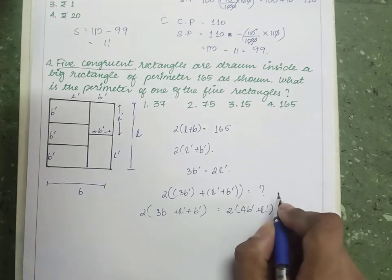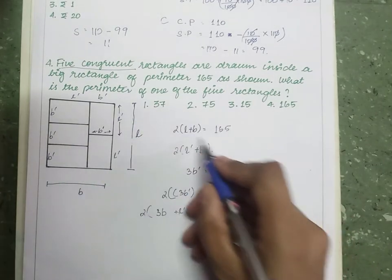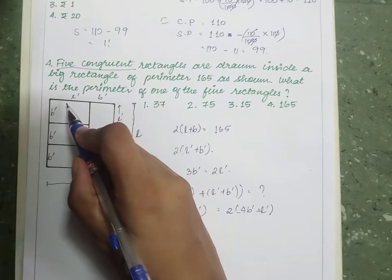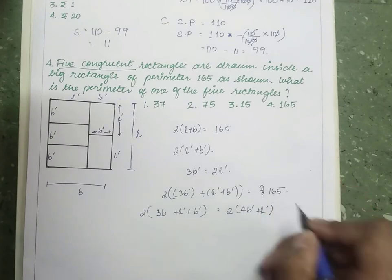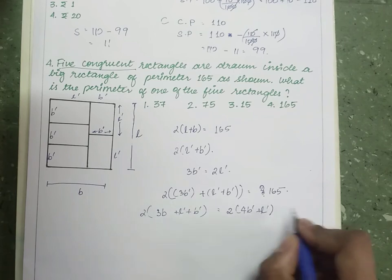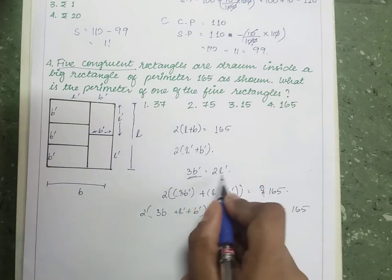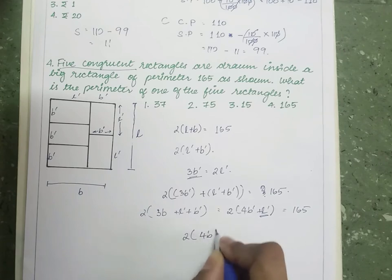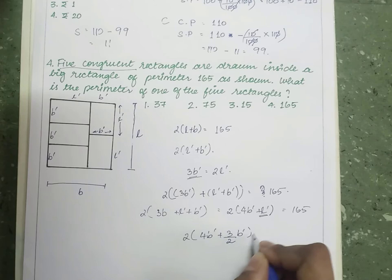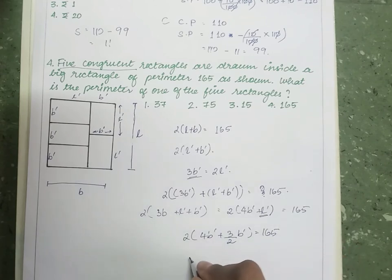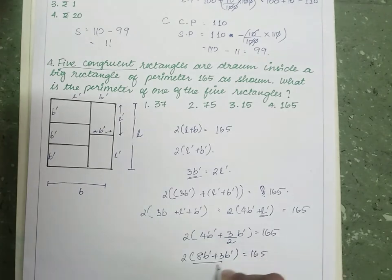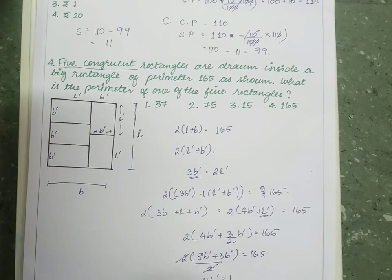Substituting into 2(L + B) = 165: 2(3b' + l' + b') = 165. Replacing l' with (3/2)b': 2(4b' + 3b'/2) = 165, which gives 2 × (11b'/2) = 165, so 11b' = 165, therefore b' = 15.